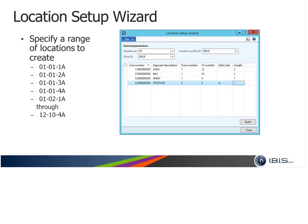Here's the location setup wizard. Now that we have created a location profile for our new bulk locations, we need to generate location names. Since this area contains hundreds of locations, we use the wizard. After selecting the warehouse, location profile, and zone, the naming convention from the location format appears on screen. You enter the range of locations you want AX to create and click build. An info log displays which locations were created — in this example, ranging from location 01-01-01-1A all the way through 12-10-4A.